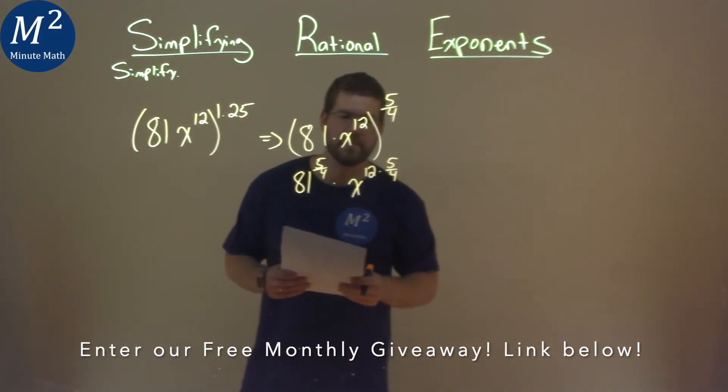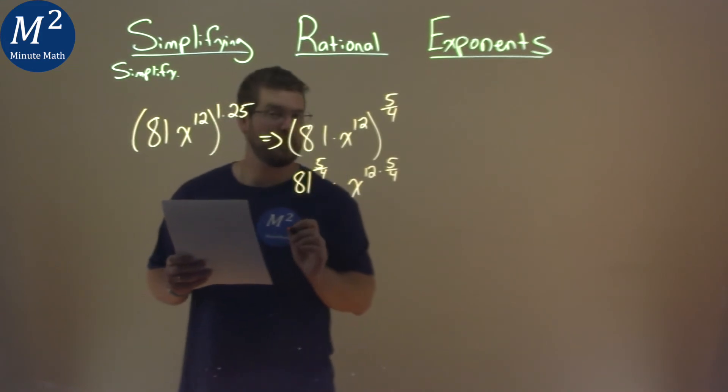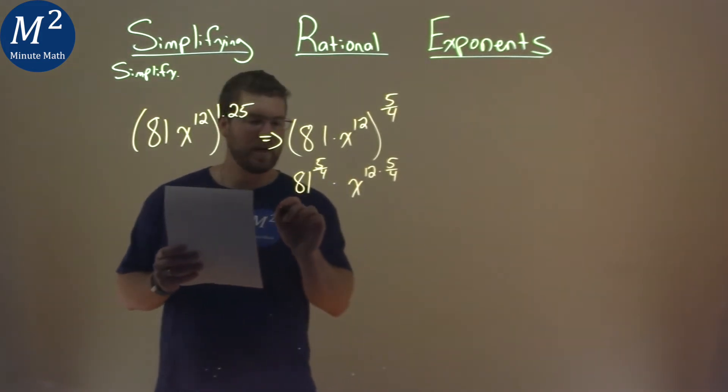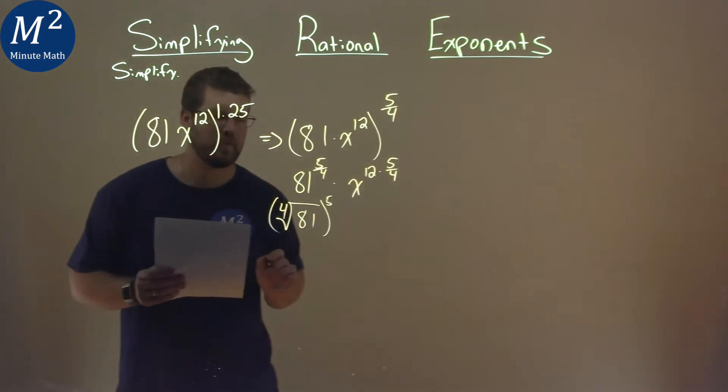Remember, we multiply the exponents here. Simplify a little bit here: 81 to the 5 fourths power is the same thing as the fourth root of 81, all to the 5th power. Remember your rules.